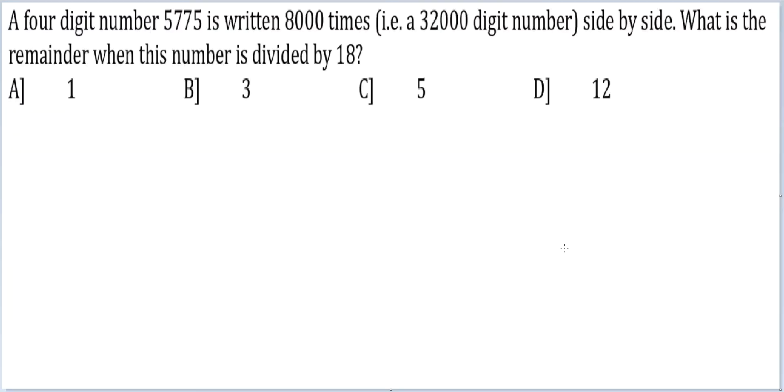Let's look at this question. A four digit number 5775 is written 8000 times. That is a 32,000 digit number side by side. What is the remainder when this number is divided by 18?